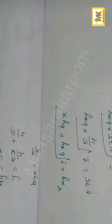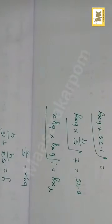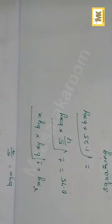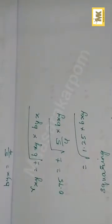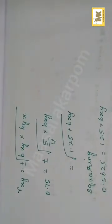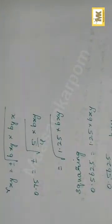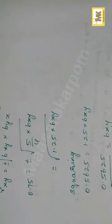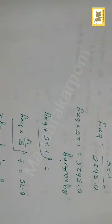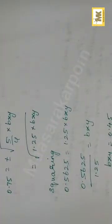Using r squared equals byx times bxy: 0.75 squared equals 1.25 times bxy, so 0.5625 divided by 1.25 gives bxy equal to 0.45.